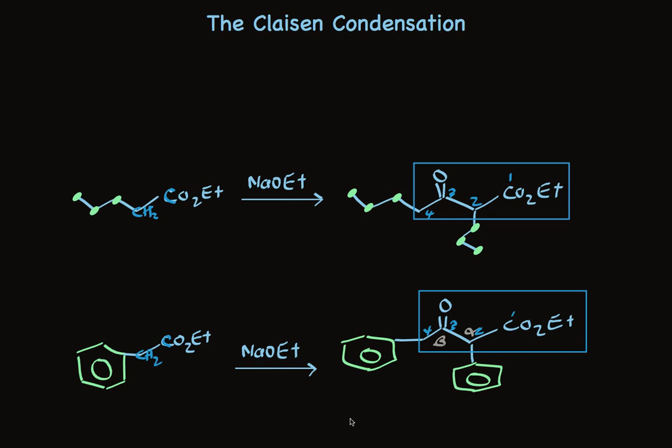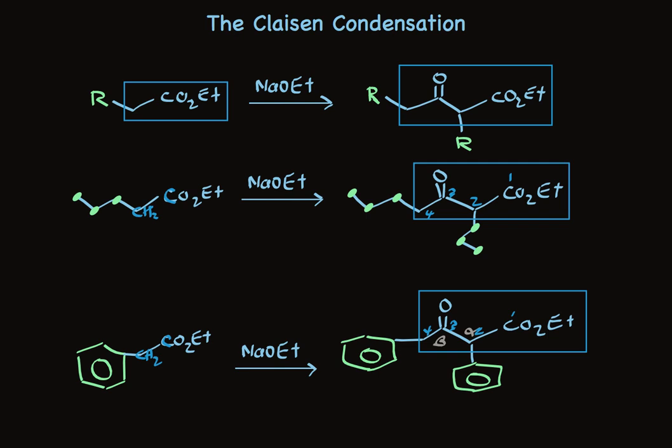So generalizing from this, we can say that the Claisen condensation is a reaction of esters, where we have a carboethoxy group and a CH2 plus something else attached in the starting material. And in the product, we have four carbons. And at the two carbon and four carbon, we have the same substituent attached. And the ketone is at the beta position relative to the ester.